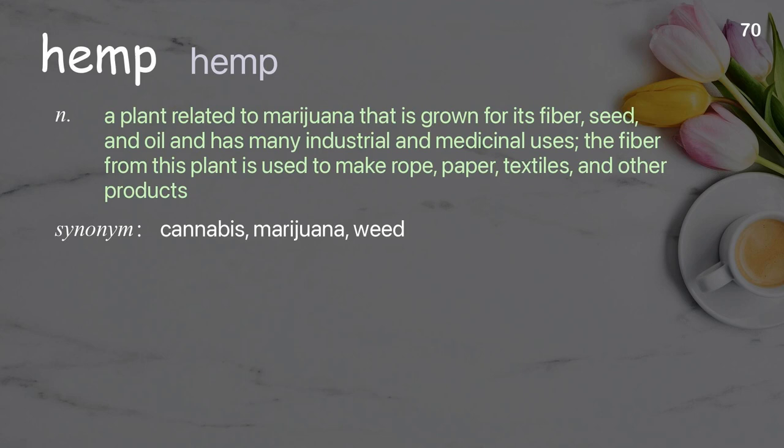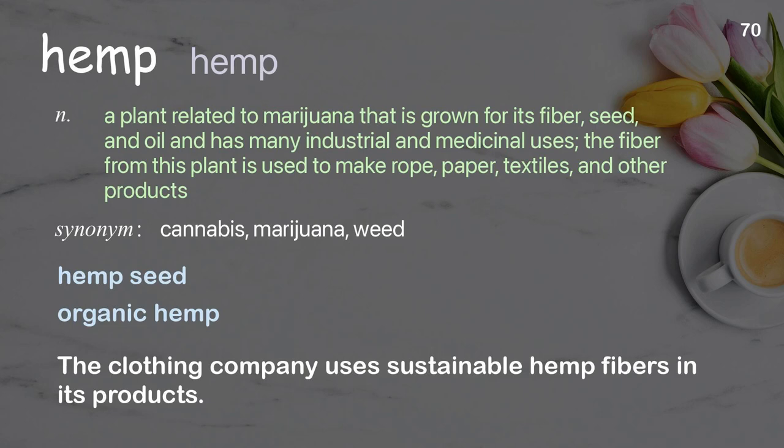Hemp: A plant related to marijuana that is grown for its fiber, seed, and oil and has many industrial and medicinal uses; the fiber from this plant is used to make rope, paper, textiles, and other products. The clothing company uses sustainable hemp fibers in its products.